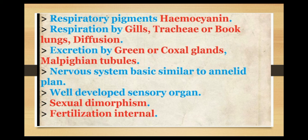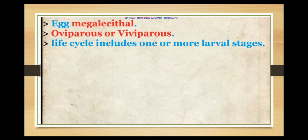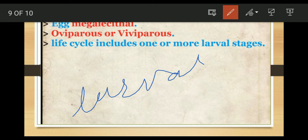Sexual dimorphism is present and fertilization is internal. Eggs are megalecithal; reproduction can be oviparous or viviparous. Some give birth to young ones directly. The life cycle includes one or more larval stages.